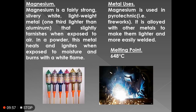The next metal is magnesium. Magnesium is a fairly strong, silvery-white, lightweight metal. Its weight is one-third of aluminium. In powder form, this metal heats and ignites when exposed to moisture, and burns with a white flame. Its applications include use in fireworks, and it is alloyed with other metals to make them lighter and more easily welded. Its melting point is 648 degrees Celsius.